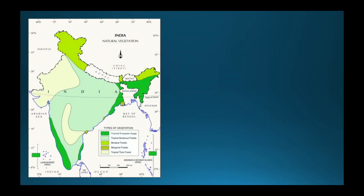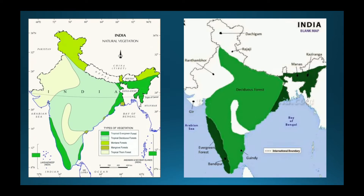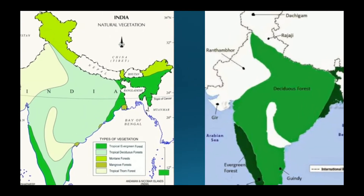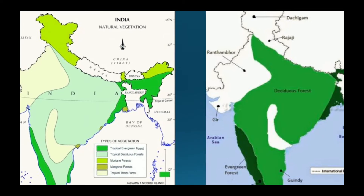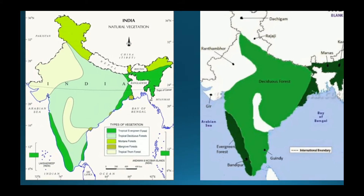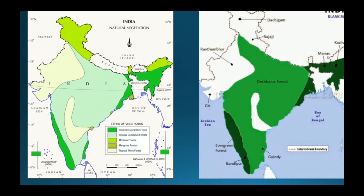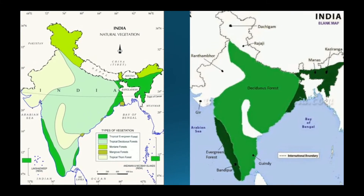Let us look at the map. On the right side you can see two colors. The darker green color, seen in the Western Ghats and north-eastern regions, shows evergreen forests. The light green color represents deciduous forests, which occupy the maximum area in India, receiving 1,000 to 2,000 millimeters of rainfall. On the left side, the neon green shows the Himalayan mountains in the north and Arunachal Pradesh. The light yellow color indicates thorny shrubs, and coastal vegetation is mainly found along the eastern coast.